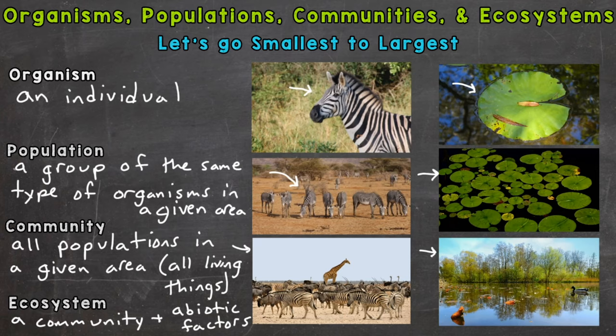We can even take it a step further. This is not written on your screen, but a biosphere includes all of the ecosystems on the planet. So planet Earth is a biosphere — all of the ecosystems combined. So there you have it — the meanings and differences between the terms organism or individual, population, community, ecosystem, and even biosphere.